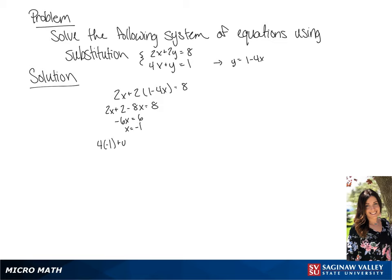Now we're going to substitute negative 1 for x in the second equation, giving us negative 4 plus y equals 1, or y equals 5. Our solution is negative 1, 5.